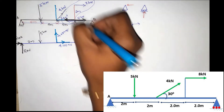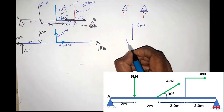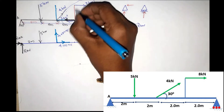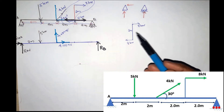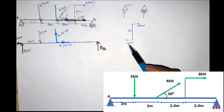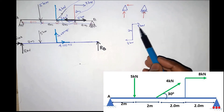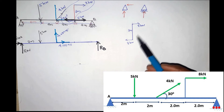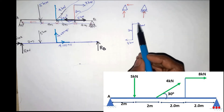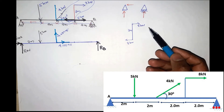Now let's start with the couple forces of 8kN and 8kN. The distance between them is 2m. We have two equal forces acting in opposite directions — it's the same magnitude. The algebraic sum of the forces is zero because the right force is plus 8 and the left is minus 8, so the net force is zero.